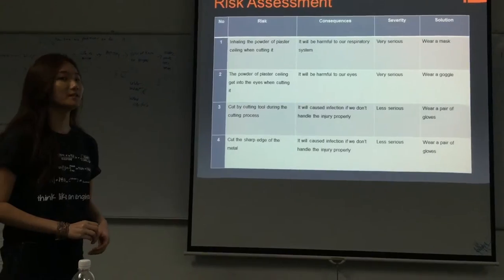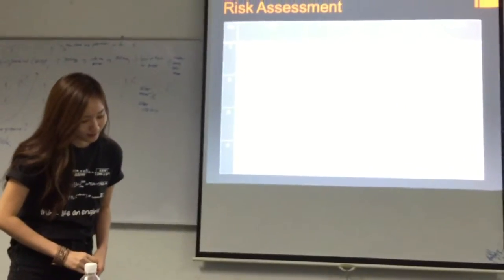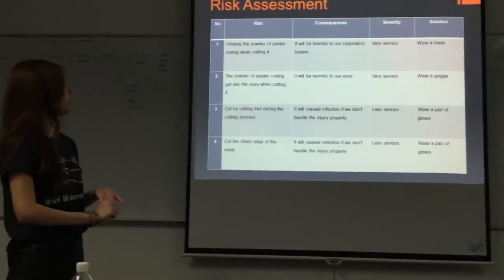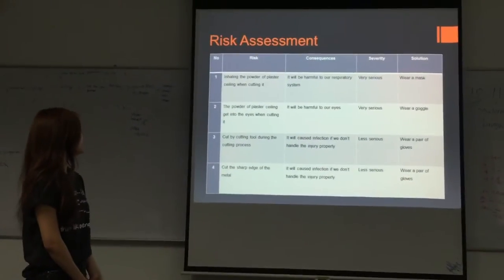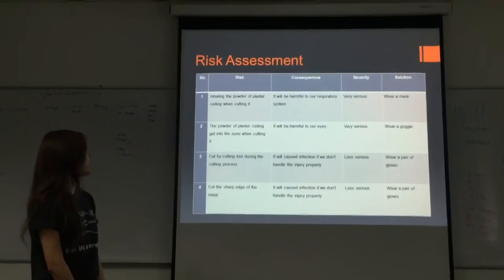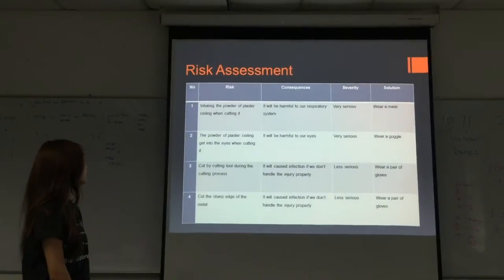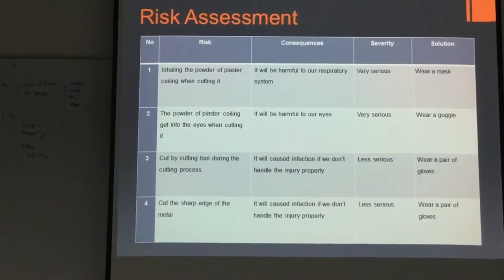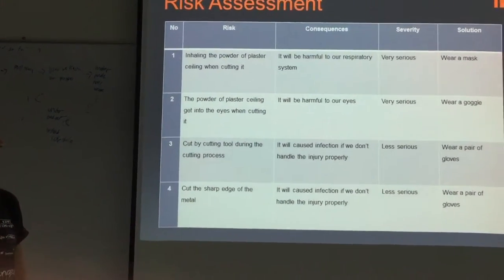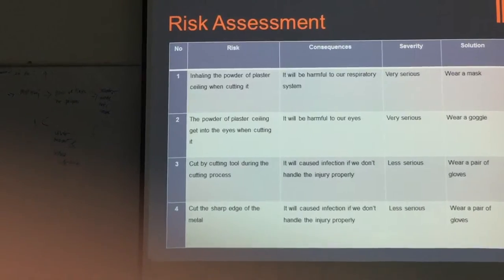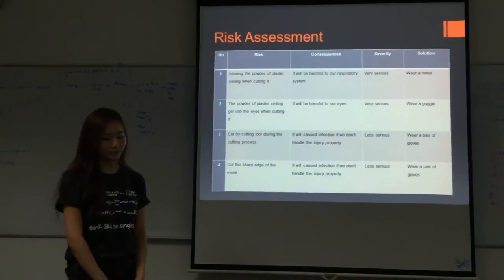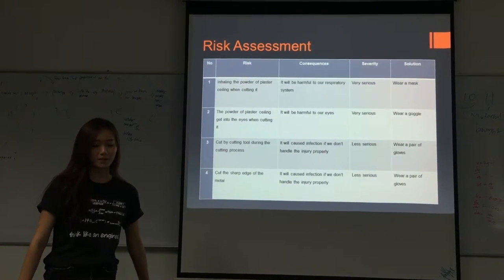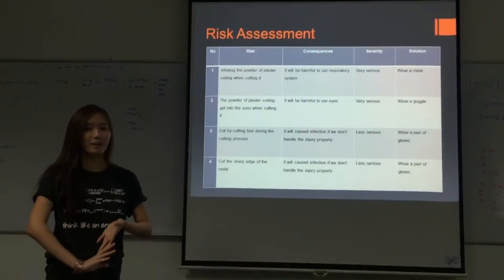Finally, the risk assessment. There are four possible risks that may occur during the process of building our project. The first risk is inhaling the powder of plaster ceiling when cutting it. The second risk is the powder of plaster ceiling getting into the eyes. The third is being cut by a cutting tool during the cutting process. And the last is being cut by the sharp edges of the metal. With the risk assessment, we can minimize or prevent the possibility of getting hurt during the entire process.